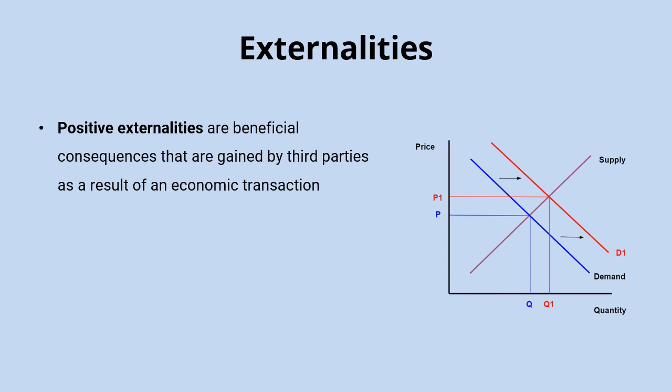A common question is: if negative externalities cause market failure, what's the problem with positive externalities? Positive externalities are beneficial — good things happening to third parties — so why is the market failing? The answer is that market failure still occurs with positive externalities, just as it does with negative ones, because market failure is about the inefficient allocation of resources. Going back to the supply and demand diagram: the demand curve is constructed with consumers only considering private benefits of their consumption decision.